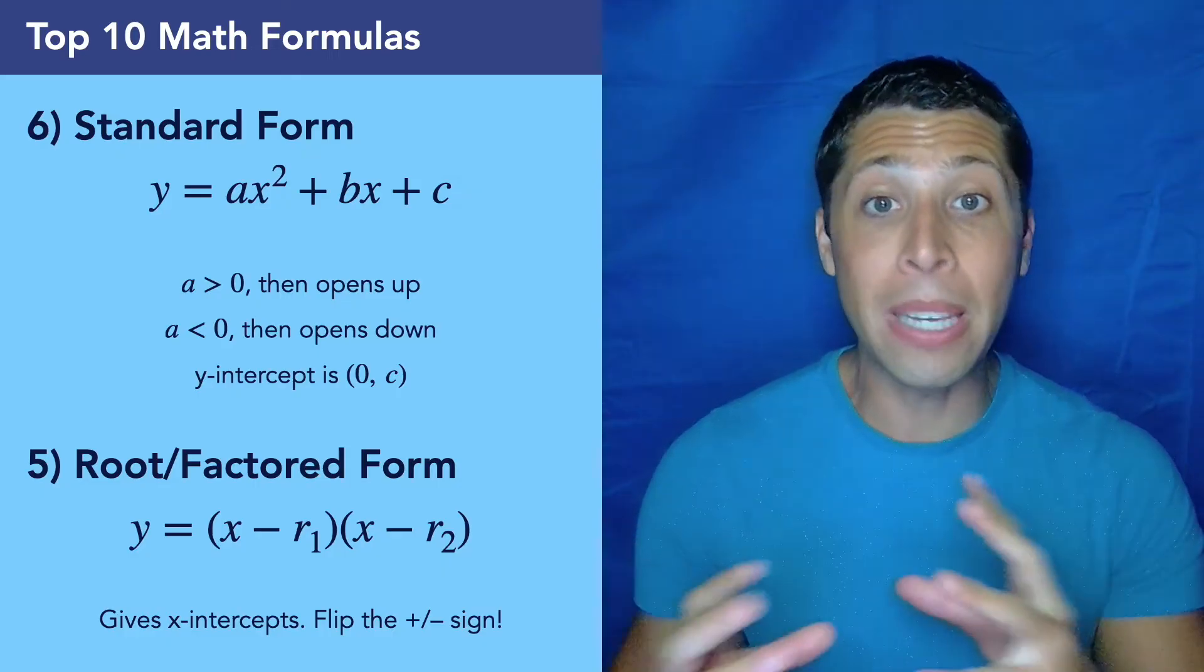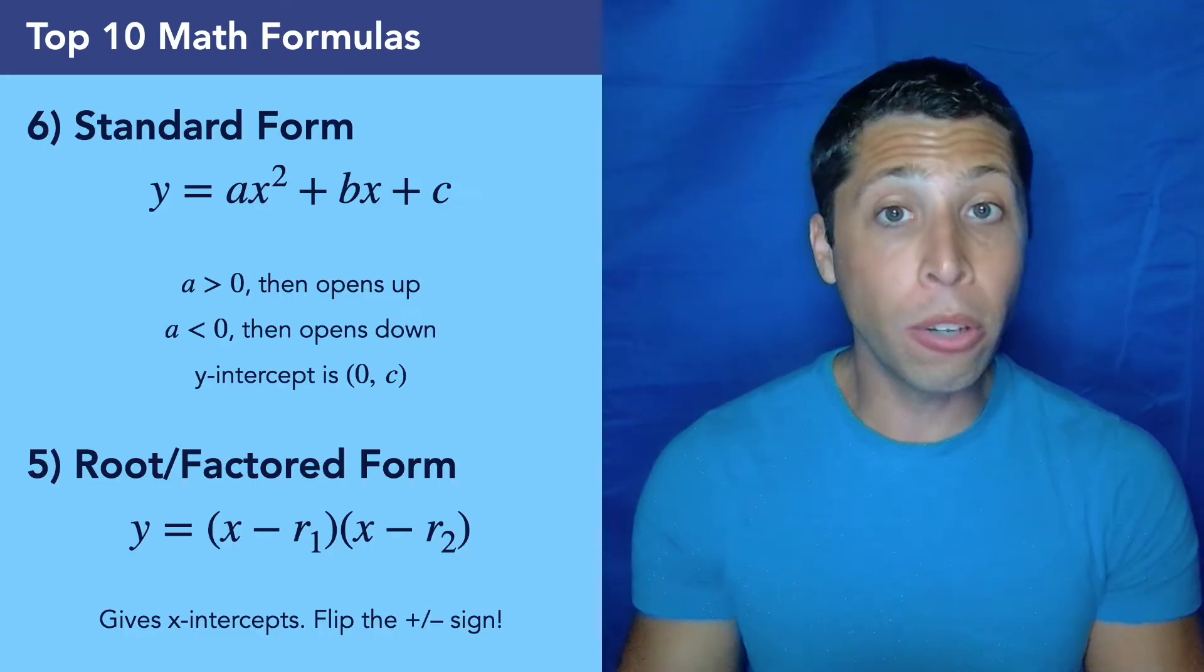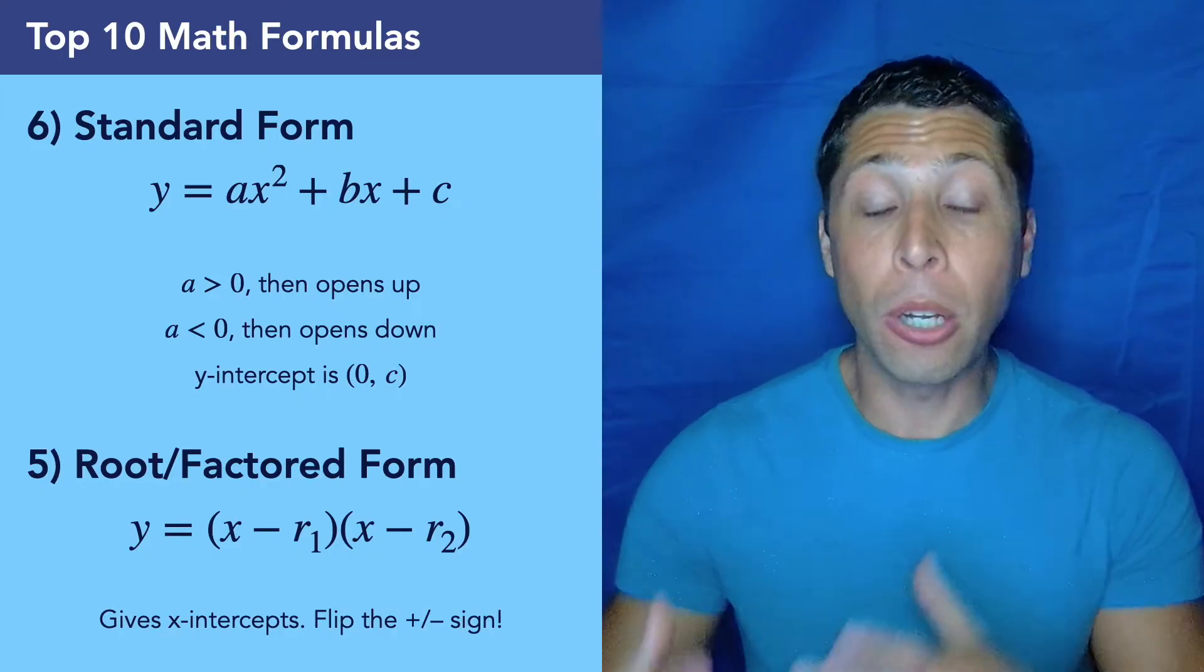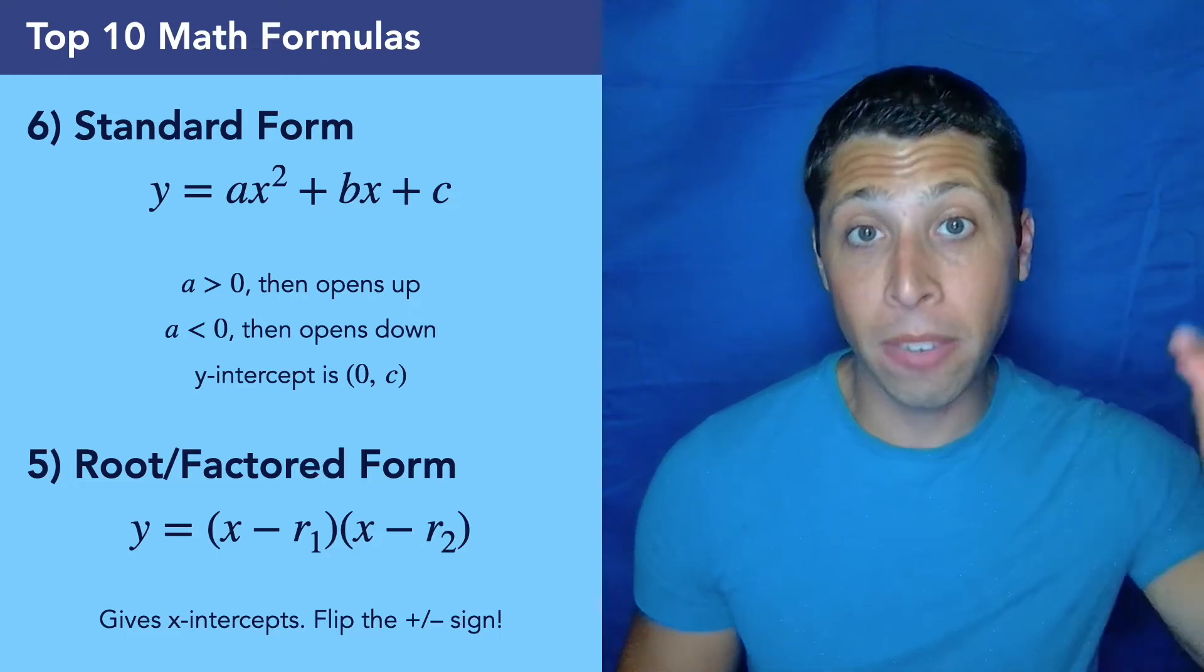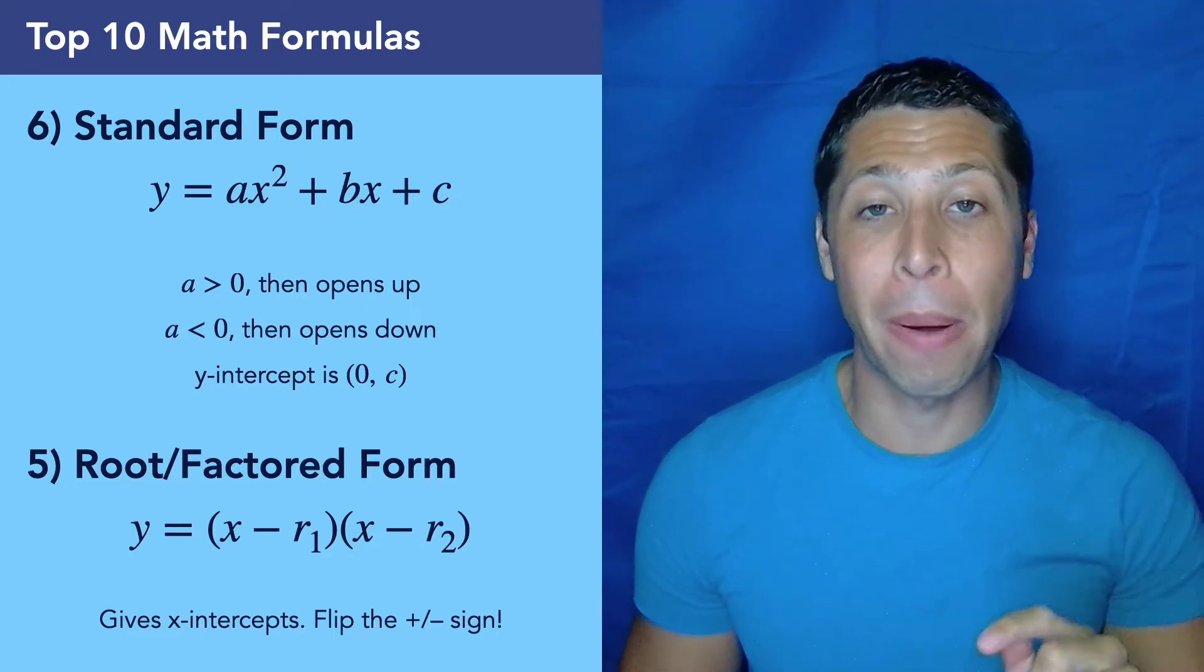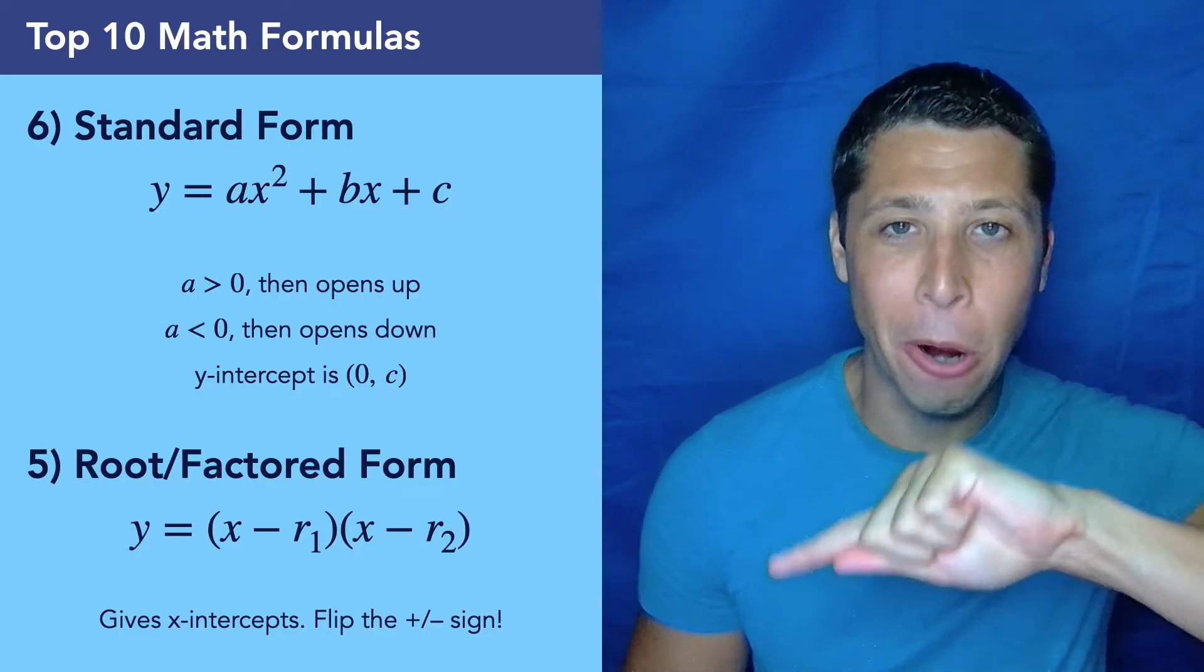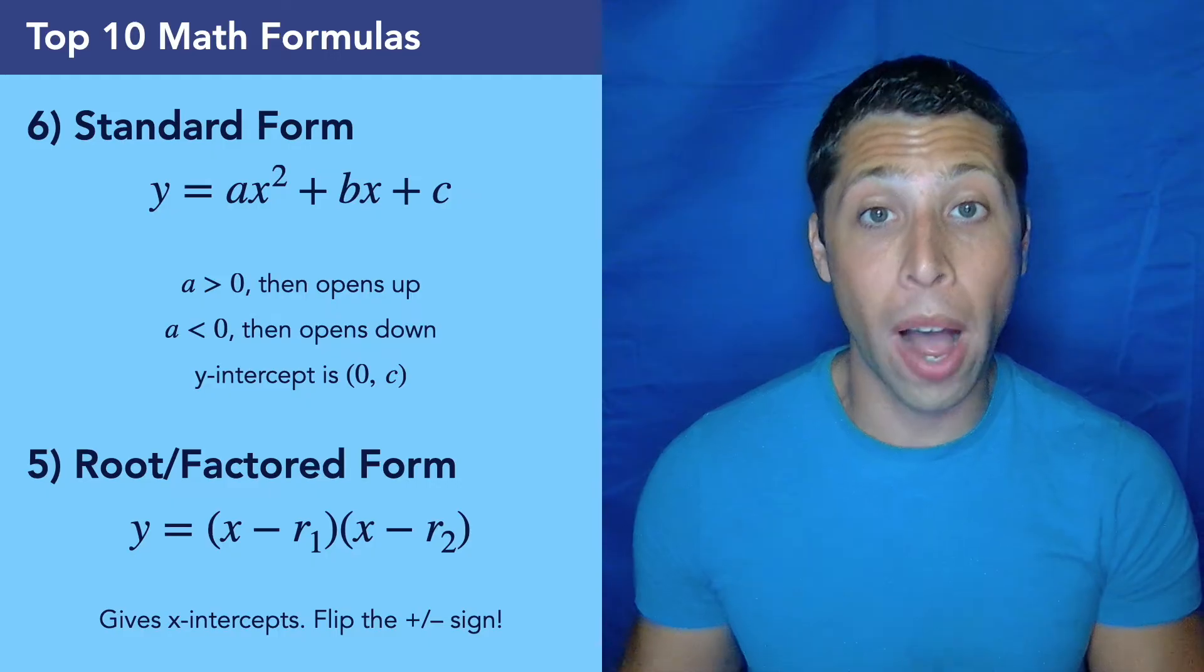But beyond just being able to solve a quadratic equation by factoring, we also need to understand what it gives us about the parabola when we see these two equations. So the standard form is going to tell us the direction of the parabola. If it's smiling, if it's opening upward, it's because that a term is positive. A frown would be if it opens down, if the a term is negative. And then the c is going to give us the y-intercept.